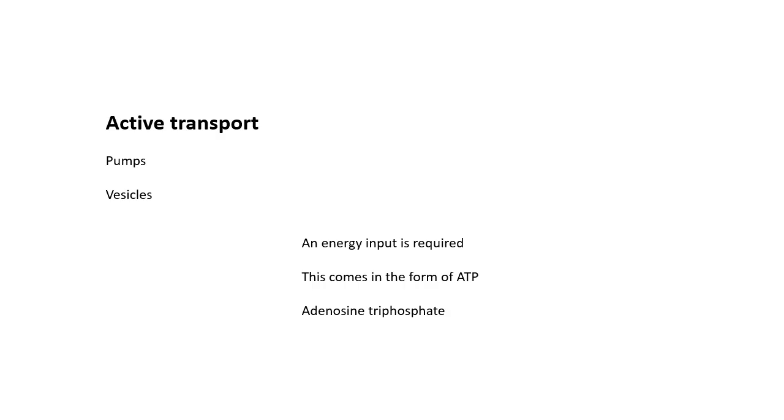We get on to active transport. Active transport needs energy. And the energy comes in the form of ATP. You should remember that ATP is produced in the mitochondria. ATP is the chemical energy, the petrol that all of our cells use to do things. And ATP is adenosine triphosphate. Triphosphate, it's got three phosphate bits to it.